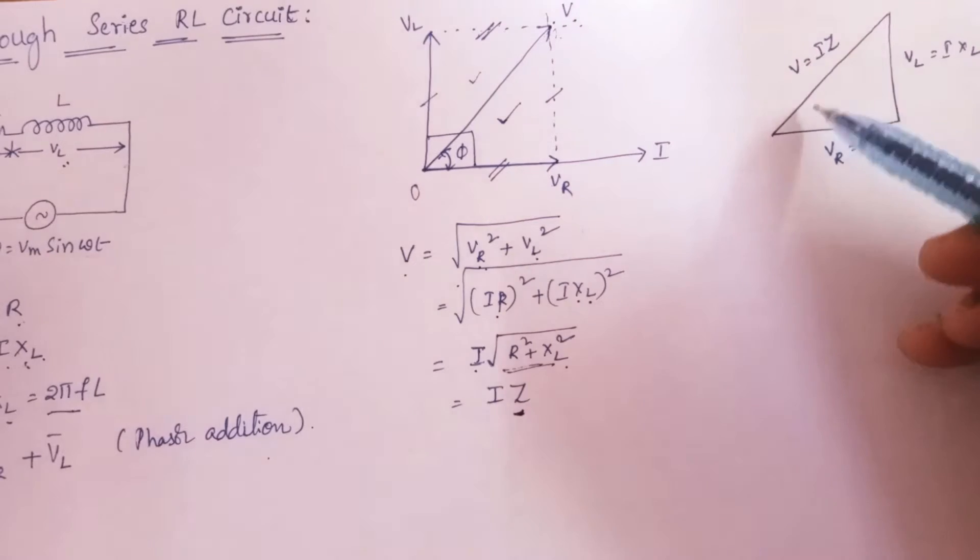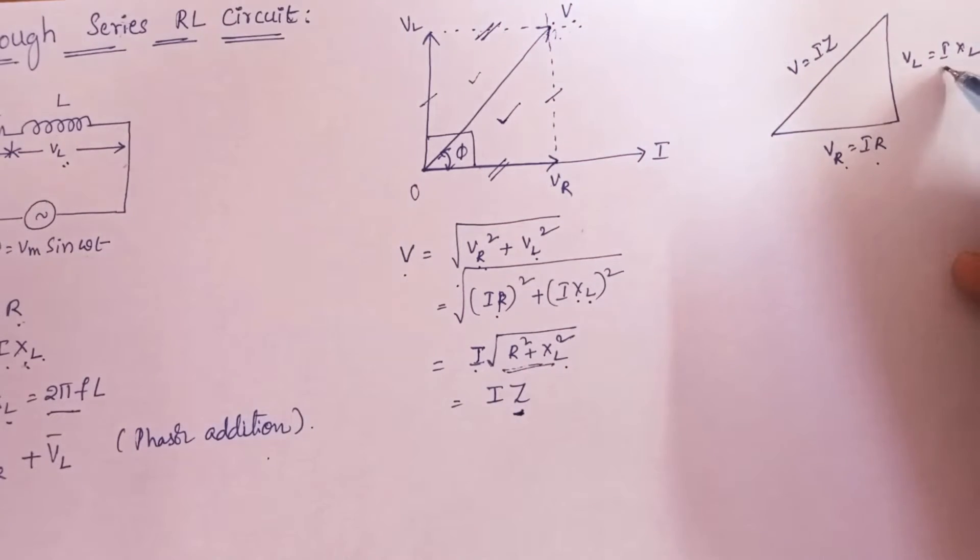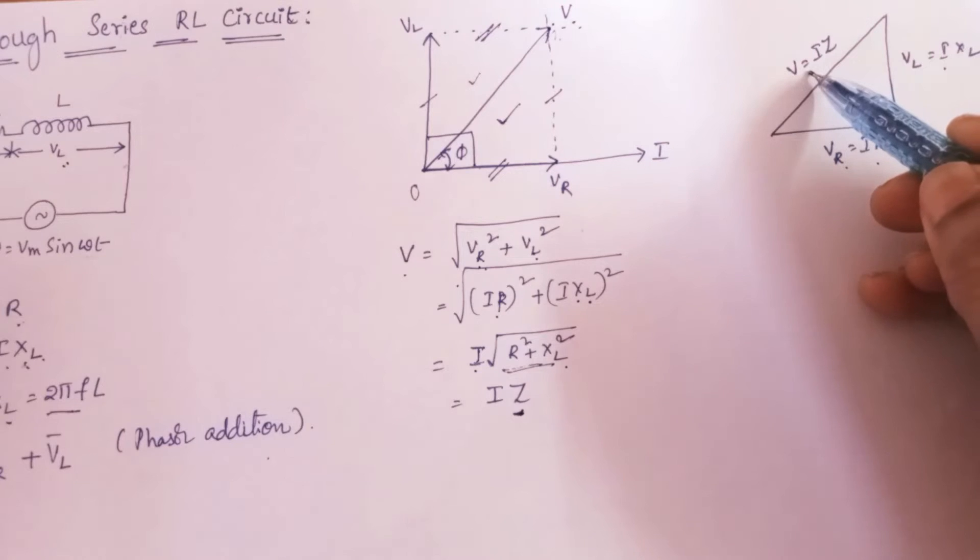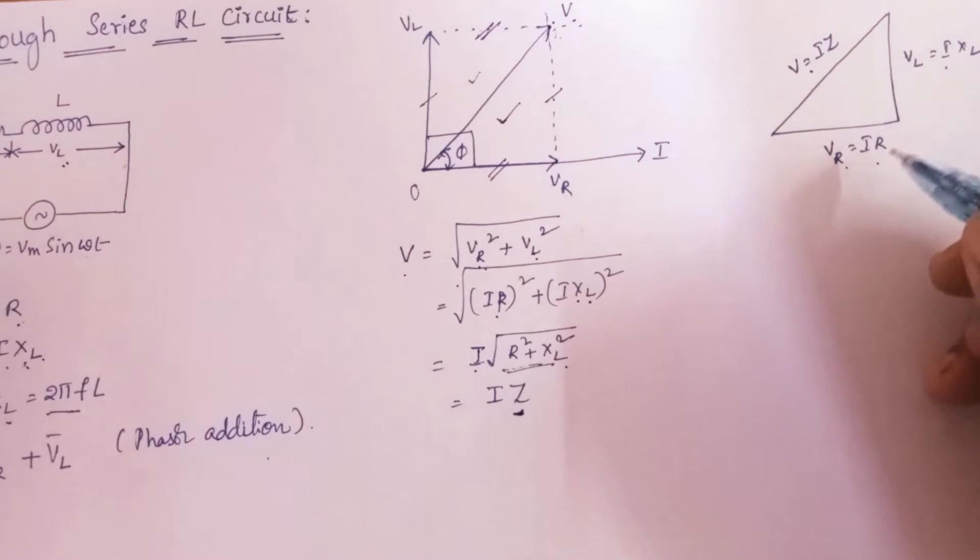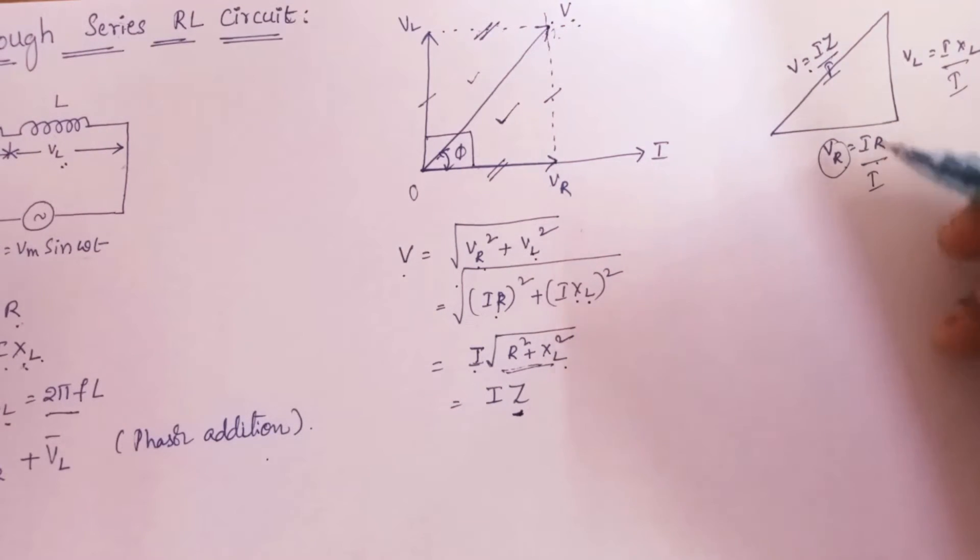So let me pick up this voltage triangle like this here. So this is your voltage triangle. This is Vr, this is Vl and this is V. Let me divide this voltage triangle with the current I. If we do so, this won't be any more voltage. So I am erasing these voltage terms.